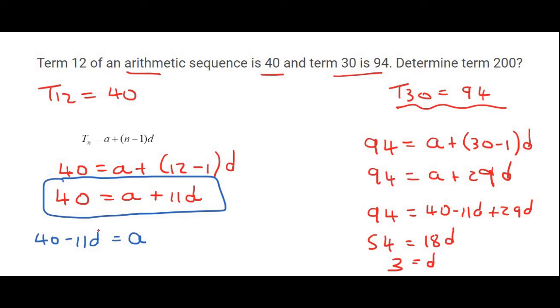I could then plug that d value back into here, and so this tells us that a would be 40 minus 11 times 3, and so a would be 7.